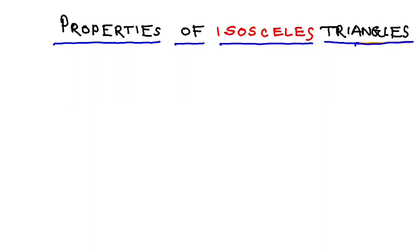Hello students, we are about to end Chapter 20 on triangles. However, questions number 8, 9, and 10 are left. In order to solve those questions, you need to learn the properties of isosceles triangles. Once you learn these two properties that I am going to discuss now, then only you can try to solve questions 8, 9, and 10.